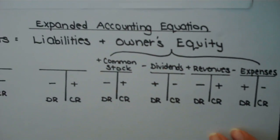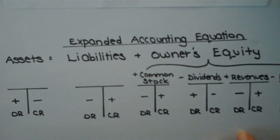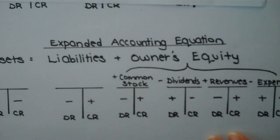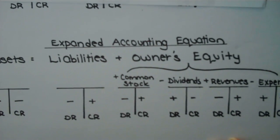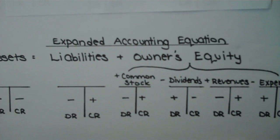It's very important for you to remember the normal balance for each one of these accounts — assets, liabilities, and all four subcategories of owner's equity. Because after chapter two, we move rather quickly, and we just start saying normal balance debit, normal balance credit, and you're expected to just remember that. So whatever you need to do to memorize this, please do so.